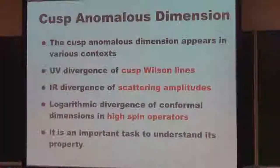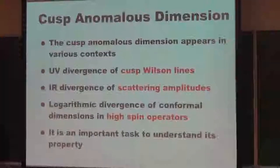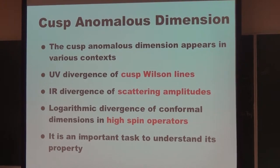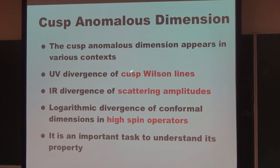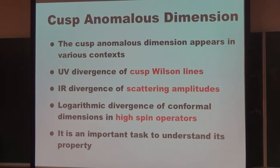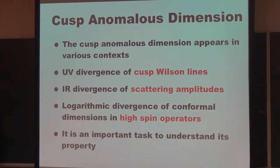Let me start with the cusp anomalous dimension. The cusp anomalous dimension is a very important object in gauge theory, appearing in many contexts. One is as the UV divergence of the Bremsstrahlung cusp, and it also appears as the IR divergence of the scattering amplitude. So understanding the cusp anomalous dimension is a very important task and the main motivation of this talk.